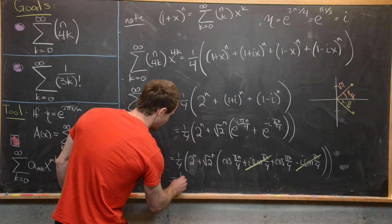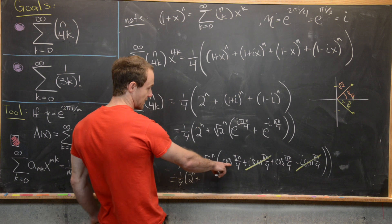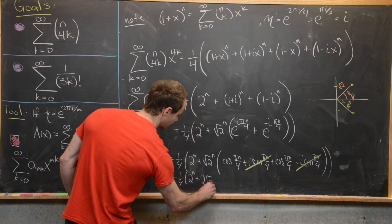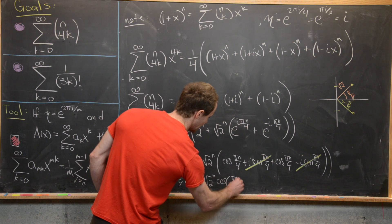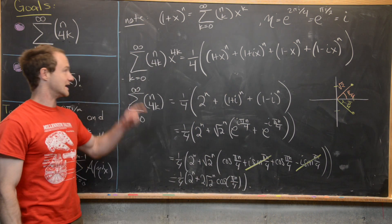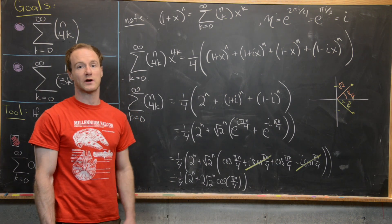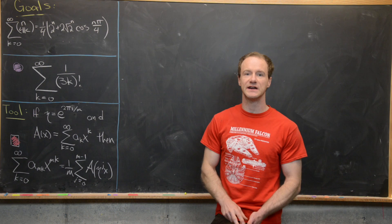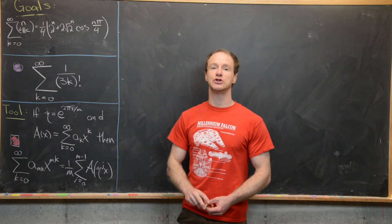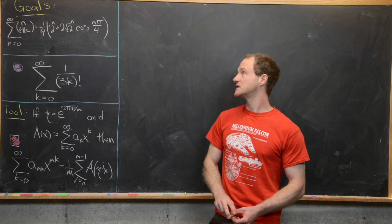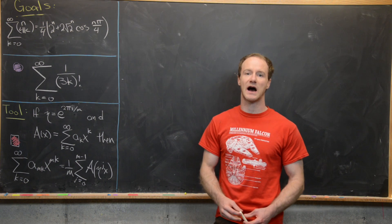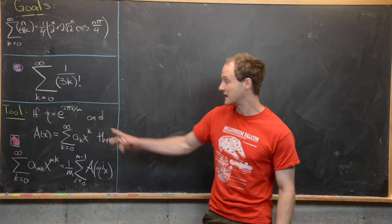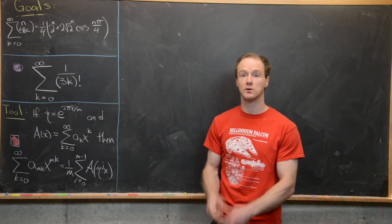So our first closed form is: the sum as k goes from 0 to infinity of n choose 4k equals 1/4 times the quantity 2^n plus 2 times (√2)^n times cosine(nπ/4). Now we'll employ a similar strategy for the second sum, again using the combinatorial tool involving generating functions.